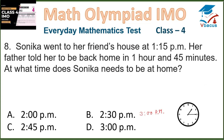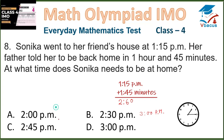Question 8. Sonika went to her friend's house at 1:15 PM. Her father told her to be back home in 1 hour 45 minutes. Adding 1 hour 45 minutes to 1:15 PM: 15 plus 45 is 60 minutes, and 1 plus 1 is 2 hours, giving 2 hours 60 minutes. Since 60 minutes equals 1 hour, that becomes 3 PM. So she has to be back home by 3 PM, which is option D.